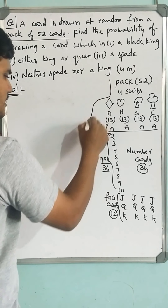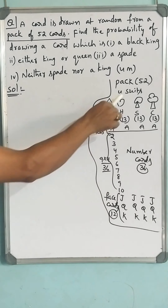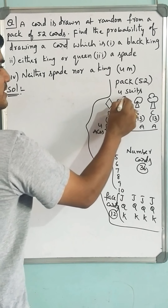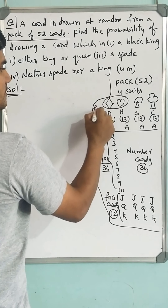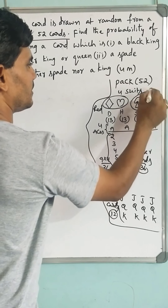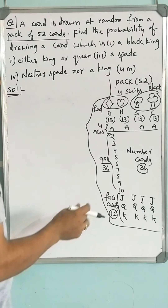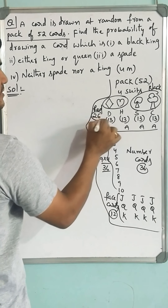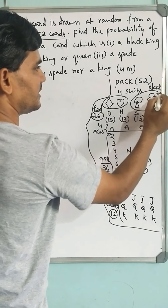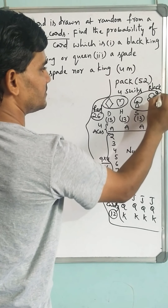This is all about a pack of 52 cards: 4 suits, among them 2 are red suits and 2 are black. Which means totally 13 plus 13 = 26 red cards, and 13 plus 13 = 26 black cards.